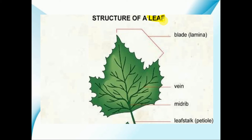Now we will understand the structural features, or the various parts of the leaf, in detail. We will start our discussion with the first part, which is known as the petiole. The petiole is a small stalk-like structure which is present along with the leaf, and it is the part of the leaf by which it is attached to the main branch. After the petiole, the second important part is your lamina, which is also known as the leaf blade. Lamina is the green colored and flattened part of the leaf.